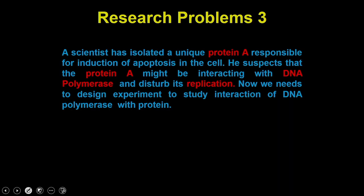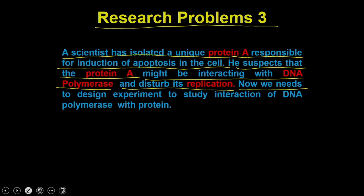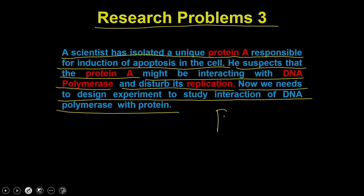Let us move on to the next research problem. In research problem number 3, a scientist has isolated a unique protein A responsible for induction of apoptosis in the cell. He suspects that protein A might be interacting with the DNA polymerase and disturbing its replication. Now we want to design an experiment to study the interaction of DNA polymerase with the protein. So protein A is suspected to be interacting with the DNA polymerase.